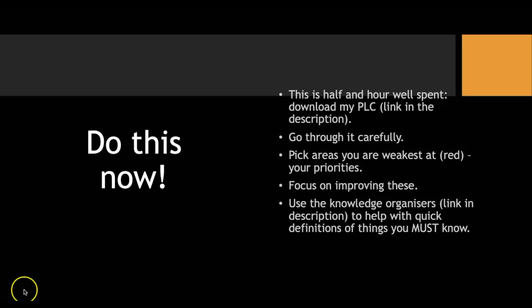So what to do now? If you're halfway through a course, I'd recommend you take an evaluation of what you do and don't know. Download the PLC — Personal Learning Checklist — link in the description. Go through it carefully, pick the areas you're weakest at in red — these are going to be your priorities. Focus on improving these, and use knowledge organizers to top up knowledge.